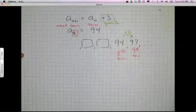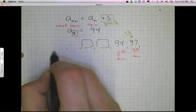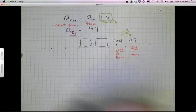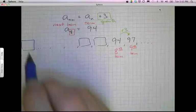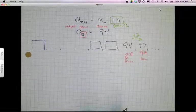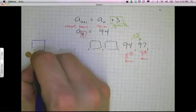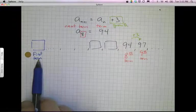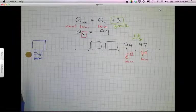What I really want to know is if I go backwards in time far enough, what is my first term? Because that is an important part of my explicit formula. So what's my first term? And how do I figure that out?